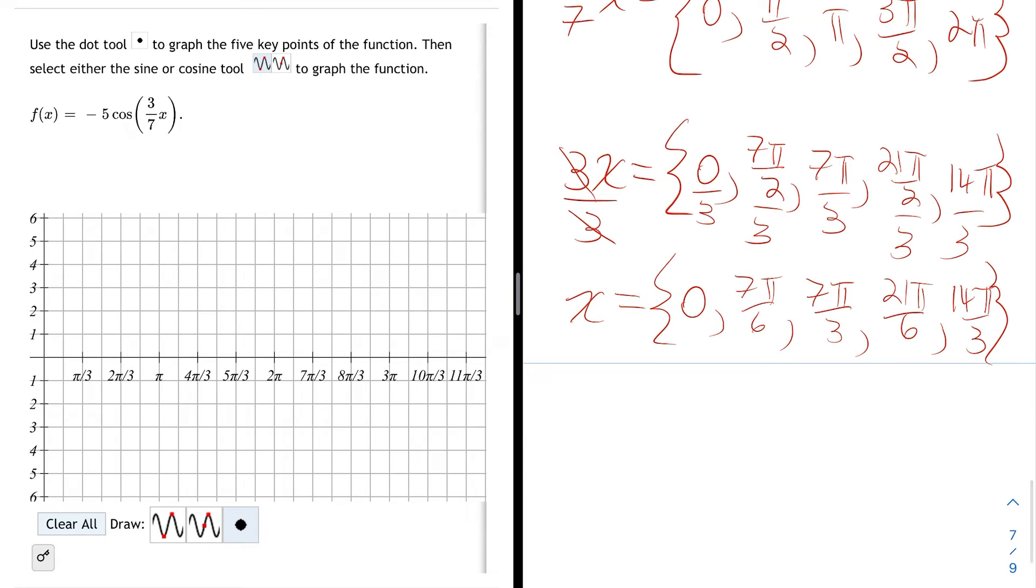Let's look at the 5 key points. The first one is a minimum at (0, -5). The x value is 0, the y value is the coefficient of the cosine, negative 5. Then the next key point is 7π/6, comma 0, because that's going to be an x-intercept.